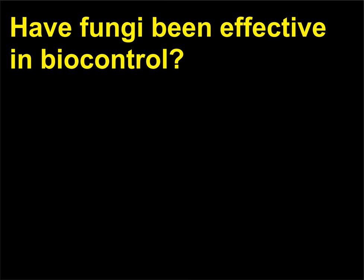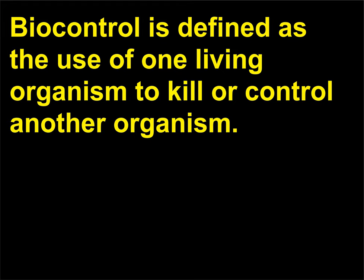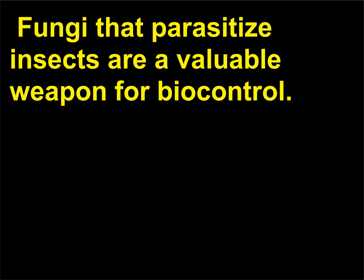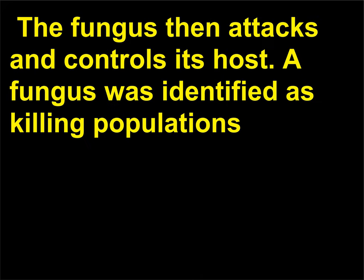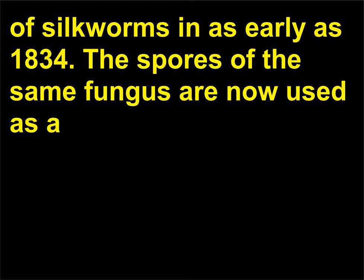Have fungi been effective in biocontrol? Biocontrol is defined as the use of one living organism to kill or control another organism. Fungi that parasitize insects are a valuable weapon for biocontrol. The spores of a parasitic fungus are sprayed on pest insects, and the fungus then attacks and controls its host. A fungus was identified as killing populations of silkworms as early as 1834.